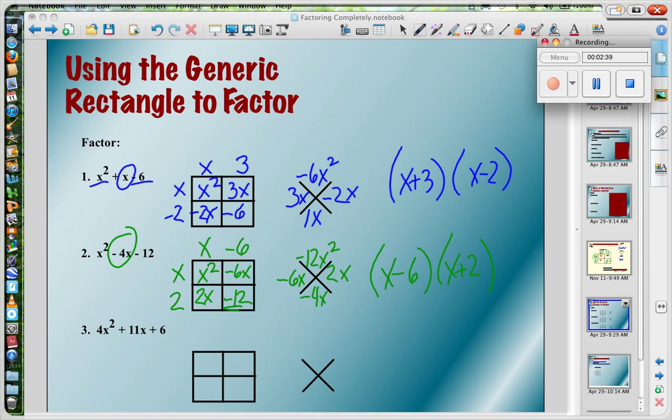This one's a little bit different because I have a 4 in front of my x squared. Same thing, though. My first term goes in the upper left, last term, bottom right, my middle term is the sum, and the product is the product of 4x squared times 6, which happens to be 24x squared.